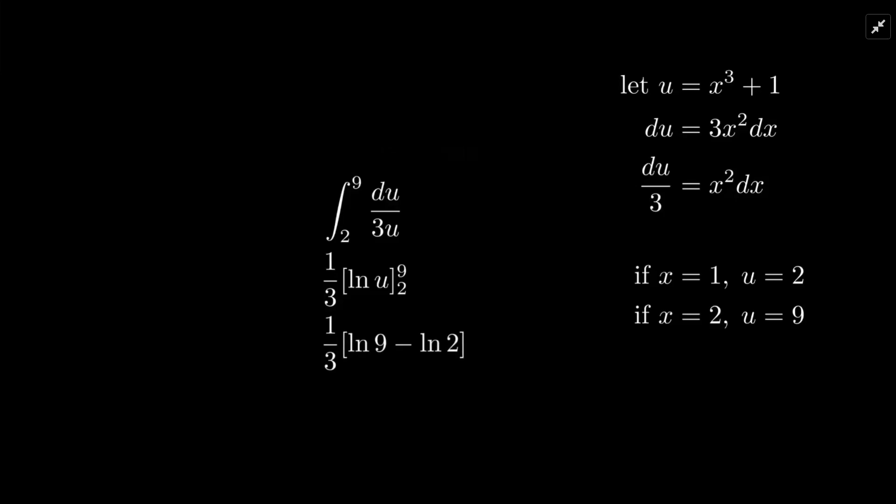There you have it. Du over u is ln u. And our approximate answer is 0.5014. Hope that was useful. Notice whenever you have the derivative of the denominator in the numerator, you're going to be doing the natural log.